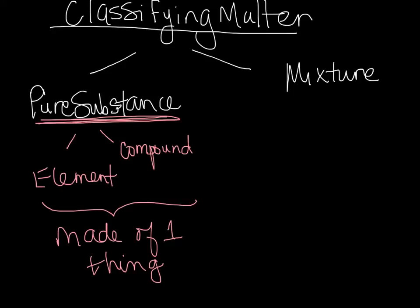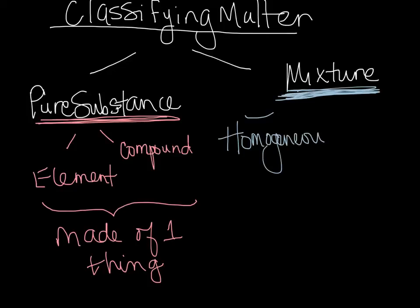Now if you are not a pure substance, if you are not made of just one thing, then you would be referred to as a mixture. Mixtures are two or more things that are not chemically combined. There's two categories for mixtures. There's homogeneous mixtures and heterogeneous mixtures.